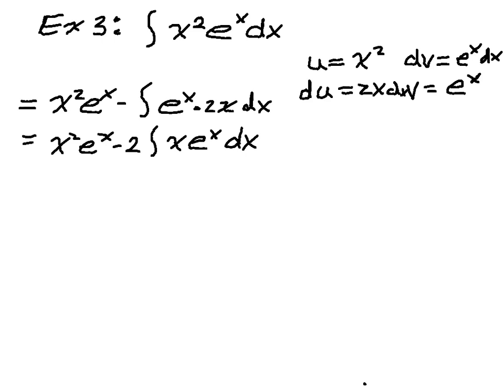What you want to do at this point is, once you've selected u, you keep going. So my new value of u is actually just going to be x. I wouldn't want to switch at this point and make e to the x my u. So I just maintain e to the x dx again.